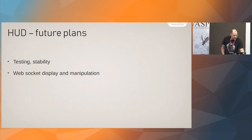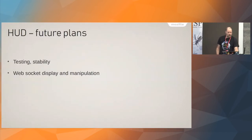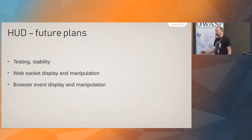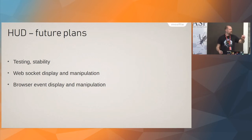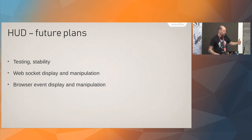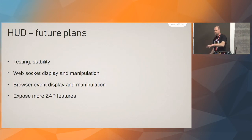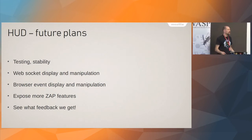Some future plans: we do need more testing and stability. WebSocket display and manipulation — you might have noticed there's actually a WebSocket tab there that does work, but it's not committed yet. Another fun thing is browser event display and manipulation. We had a student last year working on getting events from the browser — he's got a pull request where we can show anything that's written to local storage as alerts, so you can see what's going on. You'll get a counter of the number of times local storage is written to, and you'll be able to look at it and change it. We're looking at getting any other relevant browser events into the HUD as well. We want to expose more ZAP features, but the idea is not to replace the ZAP desktop — it's something different, so we don't want to overload it, and we really want feedback from people to see how you use it and what you want from it.